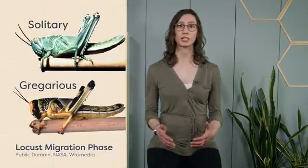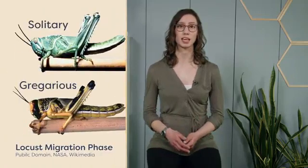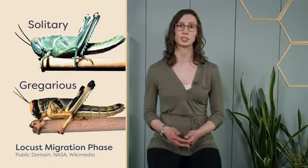Locust swarm formation is often associated with the end of the dry season. Fast vegetation growth that occurs at the end of the dry season promotes a rapid increase in grasshopper population density. These overcrowded conditions induce the migratory syndrome in these grasshoppers, and they develop into the migratory locust phase.